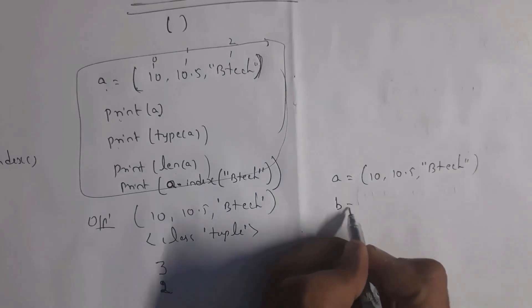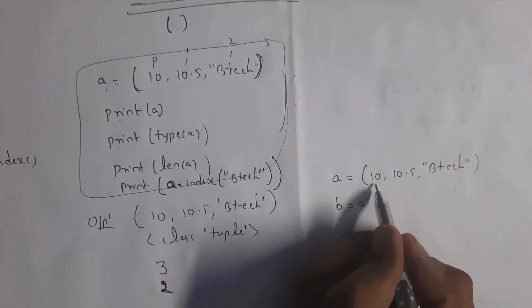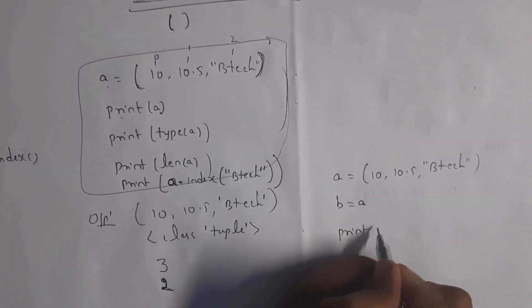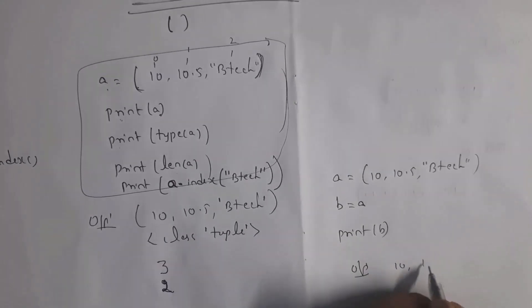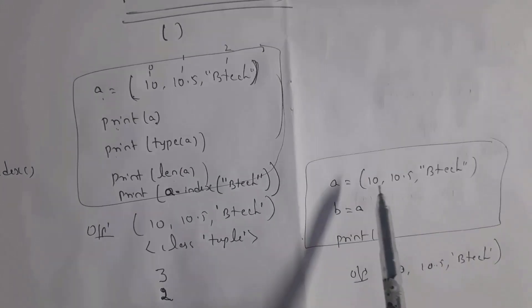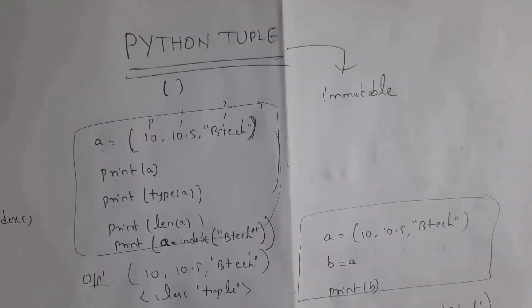So whenever you write here print b, you will get output 10, 10.5, 'btec' in single quotations and this is represented in normal brackets. This is how we copy tuple from one variable to another variable.